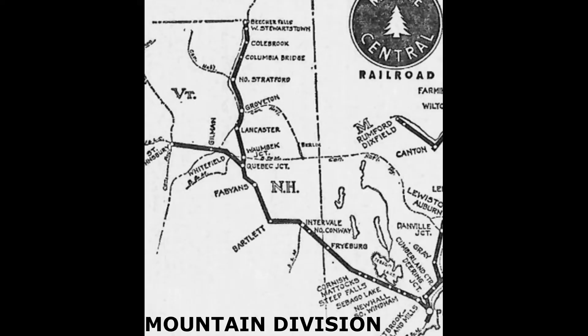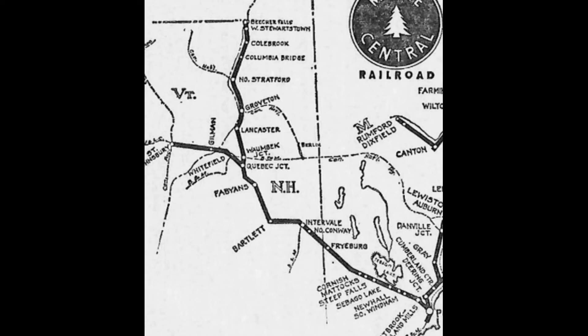The first subject I thought about was doing the mountain division, which runs from Portland, Maine to St. Johnsbury, Vermont, with a branch line at Beecher Falls. Although very scenic and often photographed, there's only one train each way between Portland and St. Johnsbury and the Beecher Falls branch — a local that ran every other day during the time period I was modeling.